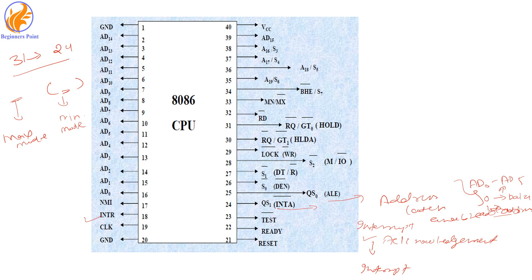Next is pin number 26, which is the DEN pin — the Data Enable pin. It works when the system is at logic low. Whenever DEN is set to zero, the system will take that particular data into consideration for any calculation or execution. Even if ALE is zero and the system identifies data on AD0 to AD15, it will not use that data for any further calculation until the status of the DEN pin becomes zero.